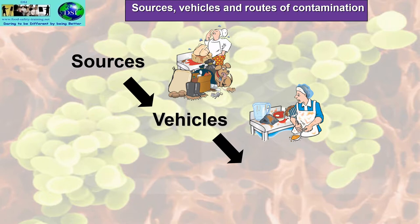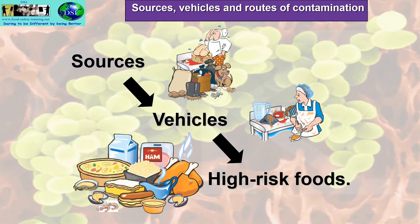The vehicles — the more technical term is Fomites, F-O-M-I-T-E-S — can be the apron of the food handler, or the handler's hands. Hands are the biggest source of cross-contamination in the kitchen, so food handler's hands must be washed regularly. Vehicles also include utensils, food containers and cloths. Bacteria reaching high-risk foods will start growing under ideal conditions, and if eaten by a customer, will cause food poisoning.